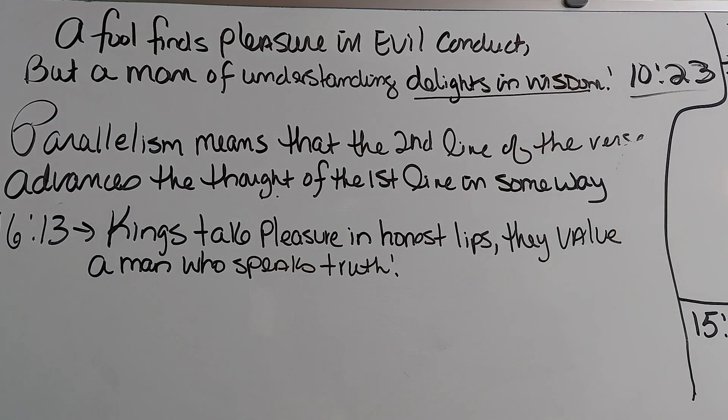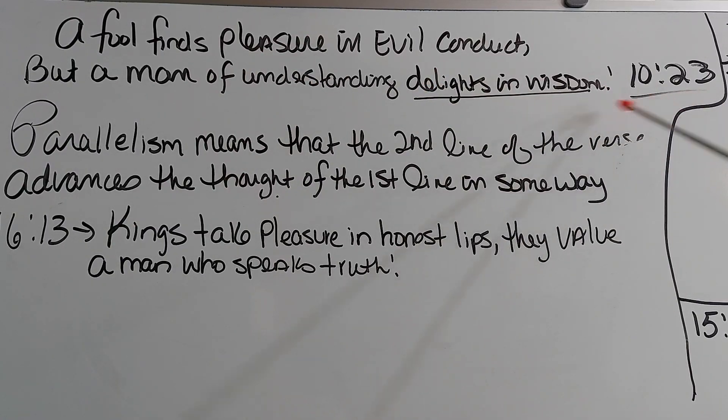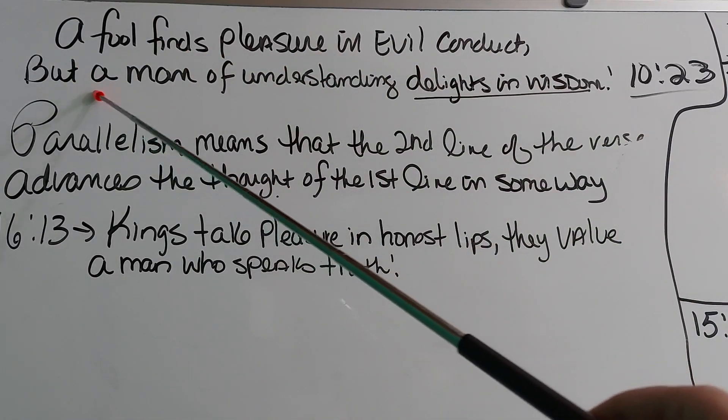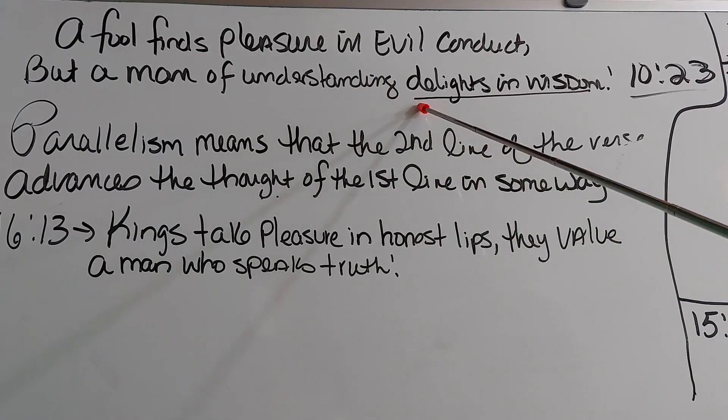So, parallel lines, they're very important features in the Biblical Proverbs. You got an English proverb, and that normally has one line, such as, a penny saved is a penny earned. But this is a Hebrew proverb right here. And that normally has two lines. In Proverbs 10:23, a fool finds pleasure in evil conduct, but, line two, a man of understanding delights in wisdom.